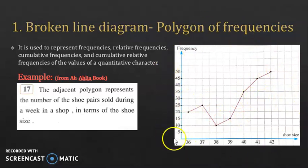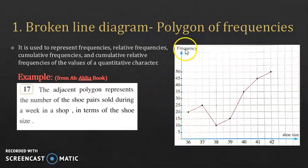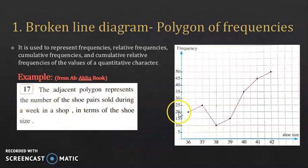Now, how do we read this graph? Let's look at the dots. For this dot, for example, it corresponds to the coordinates 36, 20. What does that mean? 36 corresponds to the shoe size, and 20 corresponds to the frequency. This means that the frequency of shoe size 36 is 20 — in other words, 20 shoe pairs of size 36 were sold during the week. For this other point, it corresponds to shoe size 40 with a frequency of 35, so 35 shoe pairs of size 40 were sold during the week.